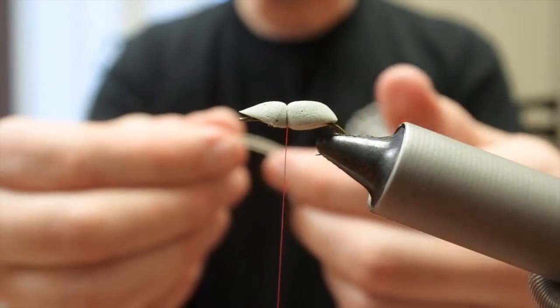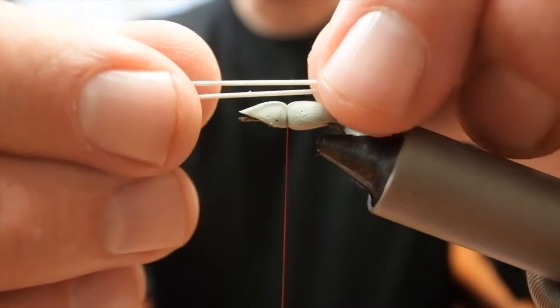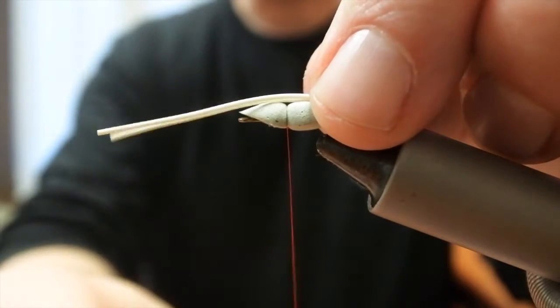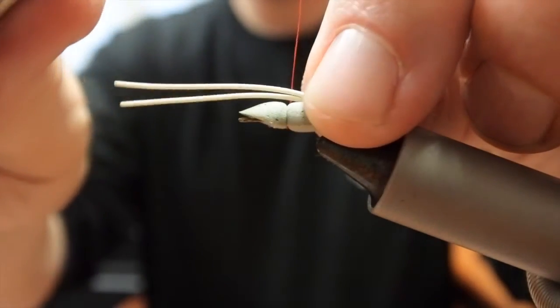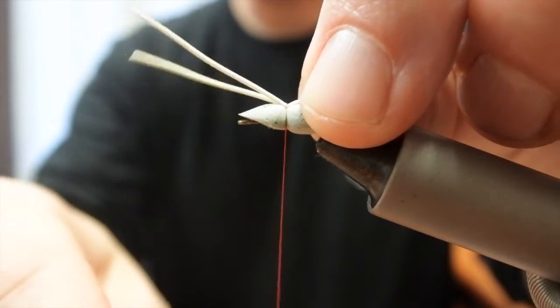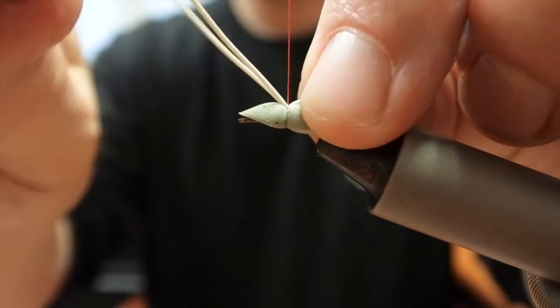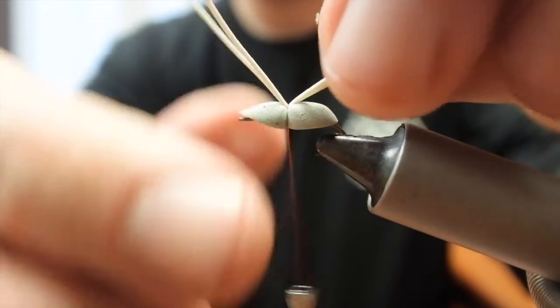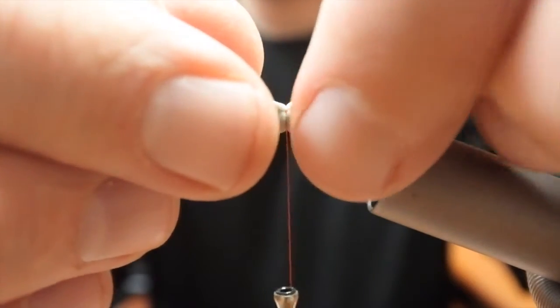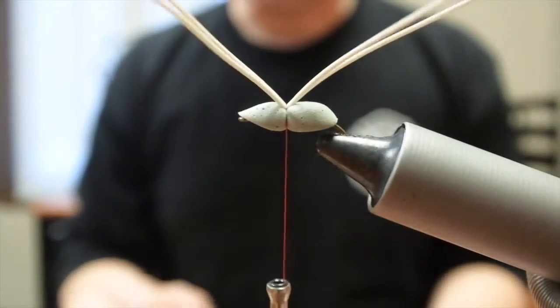This foam spider is going to have two pairs of legs. I take the first two, set them right on top, center them, do a loose wrap, tighten it down a little bit, do a second wrap. There you go. And that's the first two.